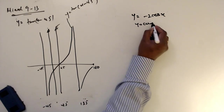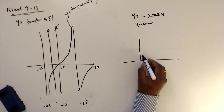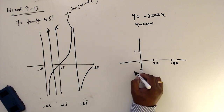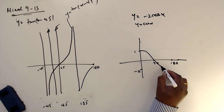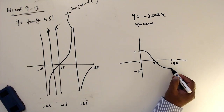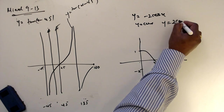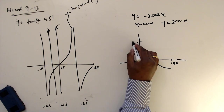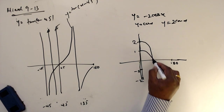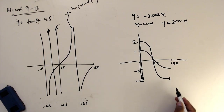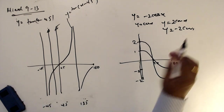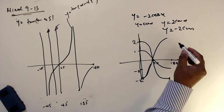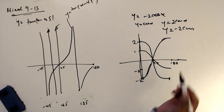Now I want to draw y equals minus 2 cos x. First I draw y equals cos x - starting from 1, going like this. Then I draw y equals 2 cos x, so the amplitude becomes 2 and minus 2. Now for y equals minus 2 cos x, I switch it - this is a reflection in the x-axis.